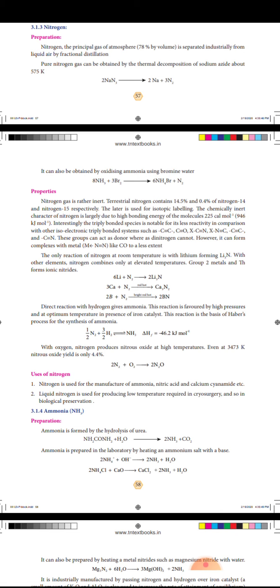Group 2 metals and thorium form ionic nitrides: 6Li plus N2 gives 2Li3N. 3Ca plus N2 gives Ca3N2 when red hot.